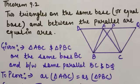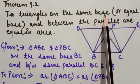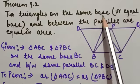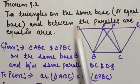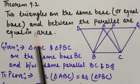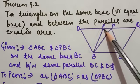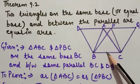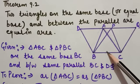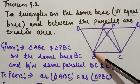Theorem 9.2 is similar to the first theorem. In Theorem 9.1 we had two parallelograms; in Theorem 9.2 we have two triangles. Two triangles on the same base — or equal base, if the bases are equal we can also follow this theorem — and between the same parallels are equal in area. We draw triangles ABC and PBC on the same base BC, between two parallels BC and DQ.